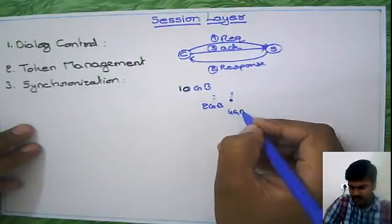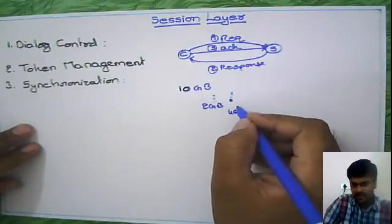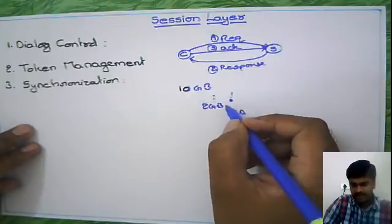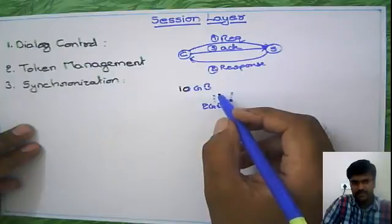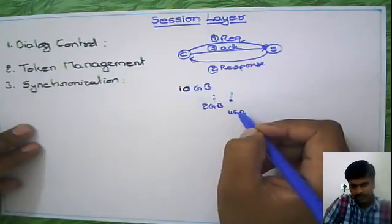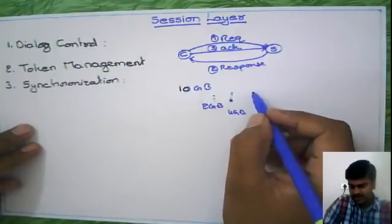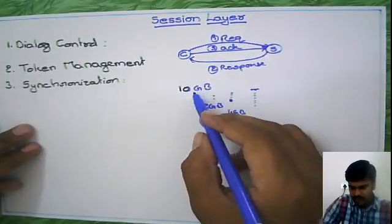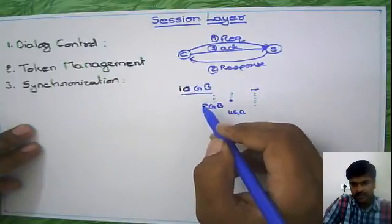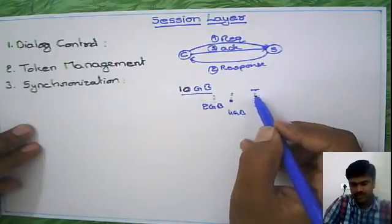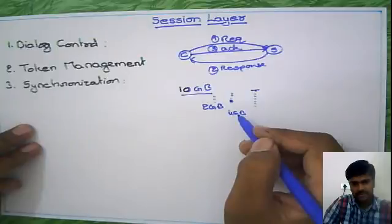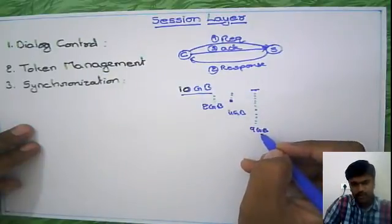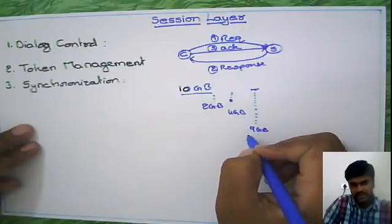If you downloaded 4 GB and the same thing happened due to a connection problem, you lost it. In this case, 4 GB was downloaded, so whenever you get the connection next time you have to start downloading from the first byte onwards — even though you already downloaded 50% of the total file. A third situation: suppose you downloaded 9 GB, meaning you downloaded almost the entire file, and then you lost the connection.